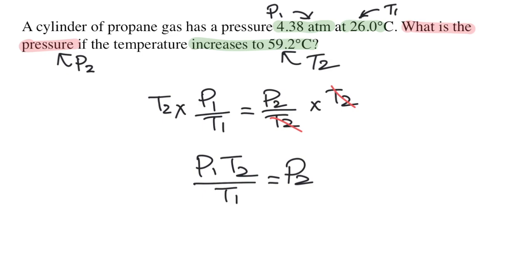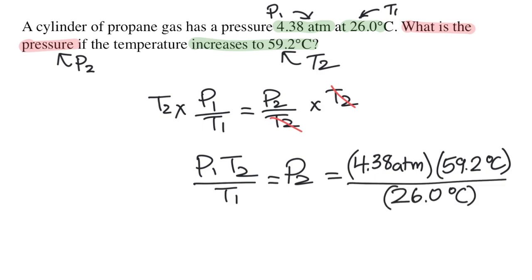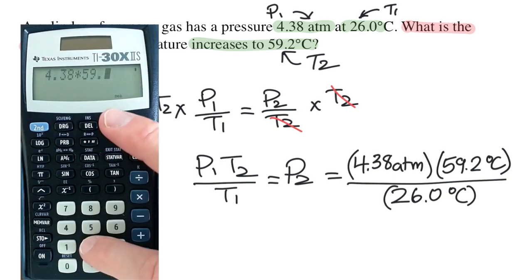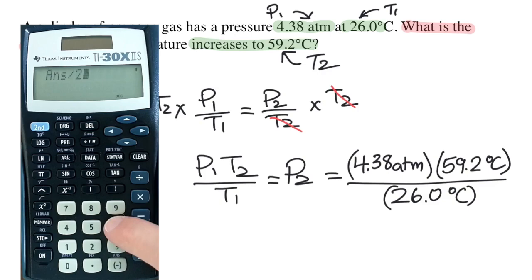Now I can just plug in all the variables that I've already labeled in the question. P1 is 4.38 atmospheres. T2 is 59.2 degrees Celsius. And T1 is 26.0 degrees Celsius. I'll plug all of this into my calculator. 4.38 times 59.2 divide by 26.